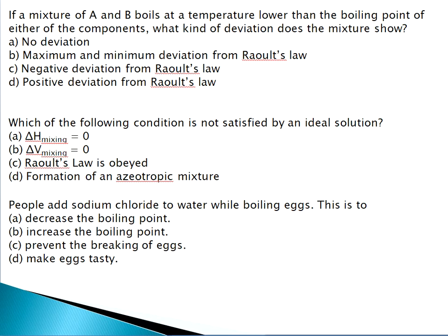Question 13: If a mixture of A and B boils at a temperature lower than the boiling point of either component, what kind of deviation does the mixture show? The answer is positive deviation from Raoult's law, because the A–B attraction is weaker than A–A and B–B attraction, and the vapor pressure is higher than predicted by Raoult's law.